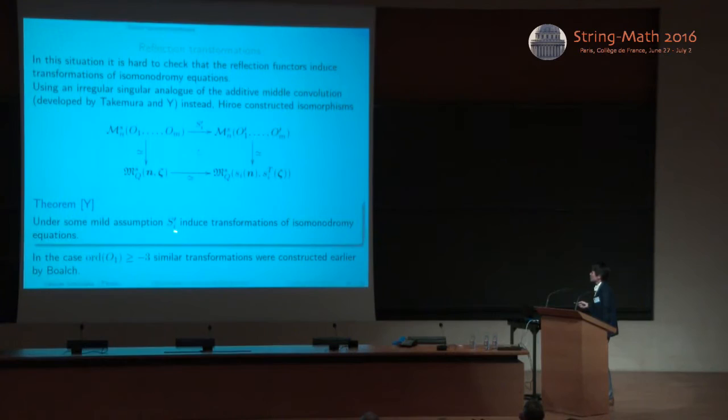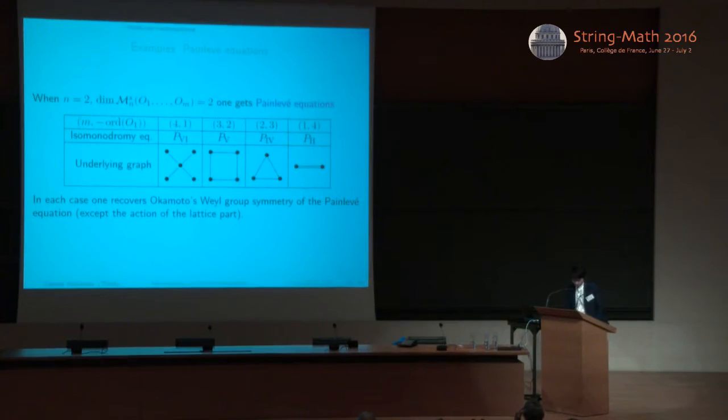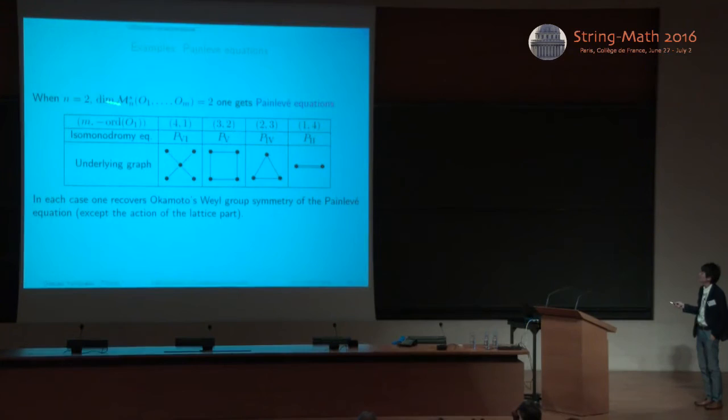So this is a generalization of Boalch's result. So he got the result in the case the order of O1 is at least minus 3. So for example, when n is equal to 2, so rank 2 case, and the dimension of the polar part manifold is equal to 2, we get the Painlevé equations.